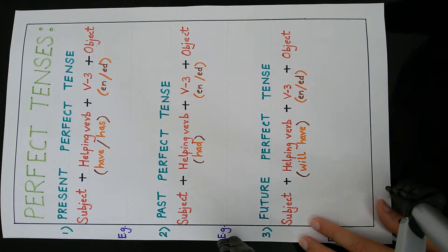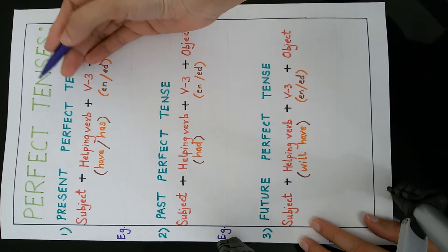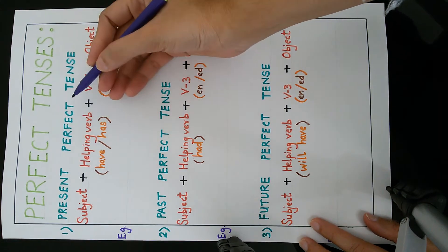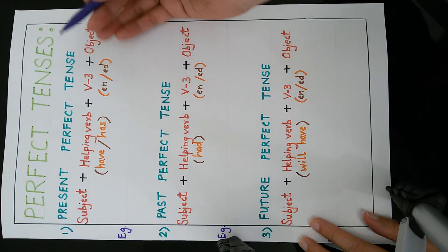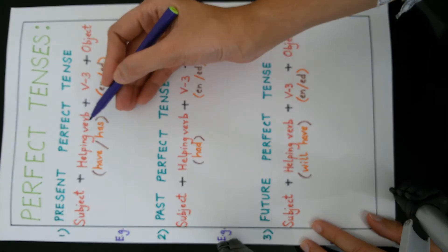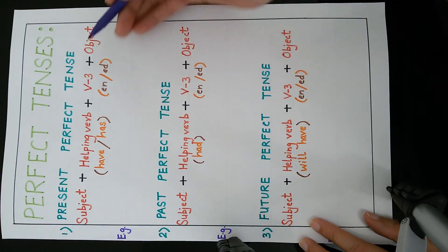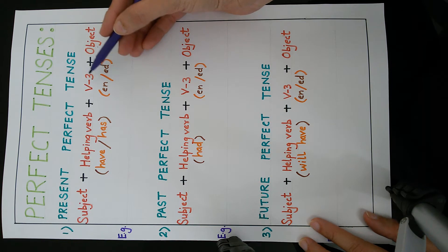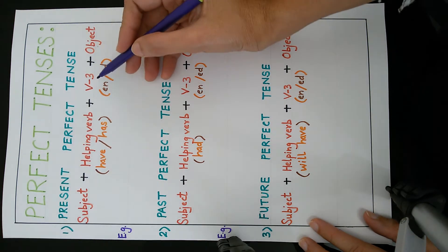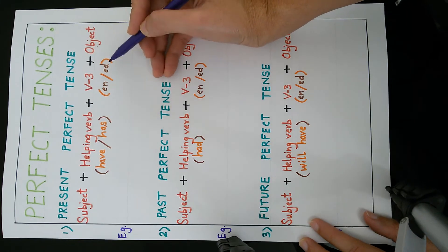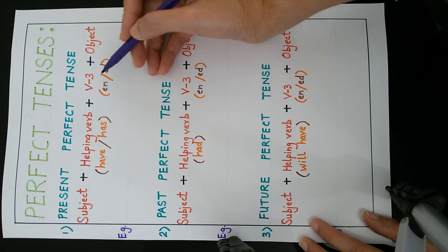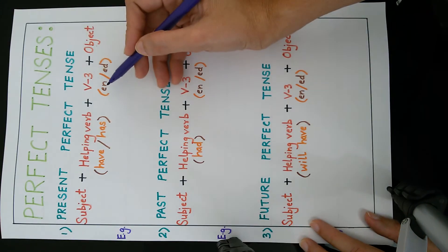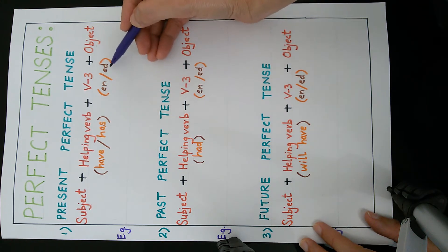In perfect tenses, the first one is present perfect tense and the formula is subject plus helping verb plus V3 plus object. V3 is the past participle form of a verb. It usually ends with 'en' or 'ed'. For example: take — taken, eat — eaten, roast — roasted.